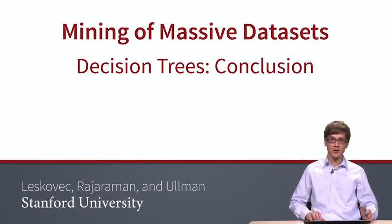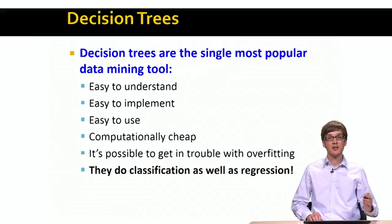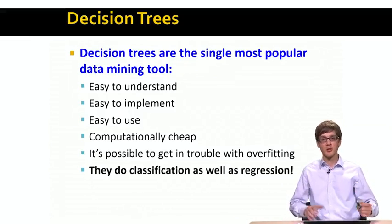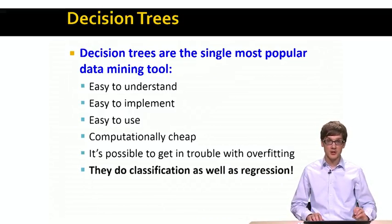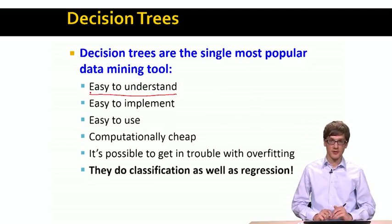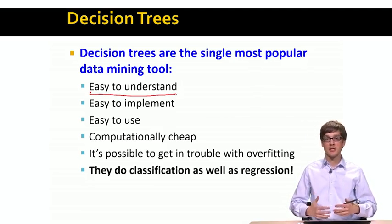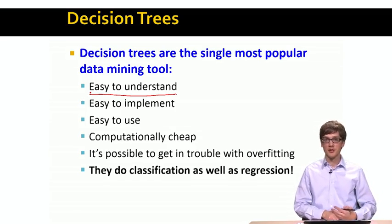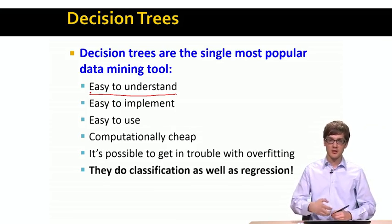Let's conclude and create an overview of what we've learned about decision trees. Decision trees are really the single most popular data mining or machine learning tool. The reason why they are so popular is the following: it is very easy to understand the structure of a decision tree. It's easy to explain to someone why the tree made a given decision — we can show them a series of splits and say, because of these conditions, this is the classification that has been made.